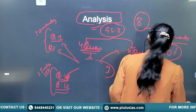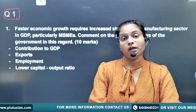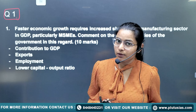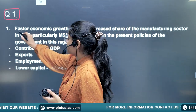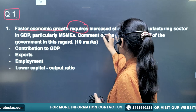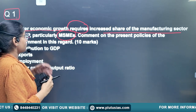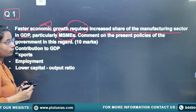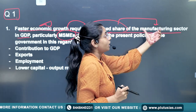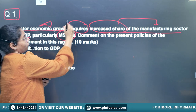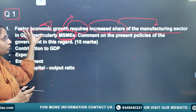Moving to the first question: 'Faster economic growth requires increased share of the manufacturing sector in GDP, particularly MSMEs.' The question targets faster economic growth through increased manufacturing, specifically emphasizing that instead of large industries, we need micro, small, and medium enterprises — MSMEs — in the manufacturing sector.